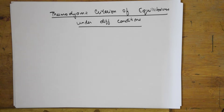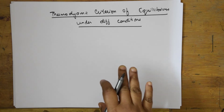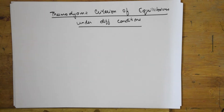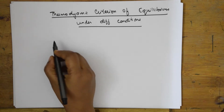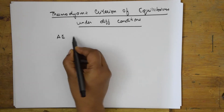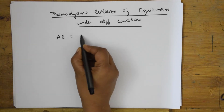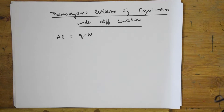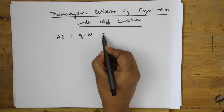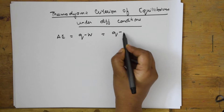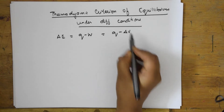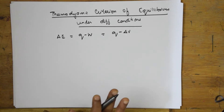In this video, we will be learning the important thing: the criteria of equilibrium under different conditions. From the first class, what did we learn? We learnt Delta E is equal to Q minus W. I can write this as Q minus P Delta V, because W is equal to P Delta V.